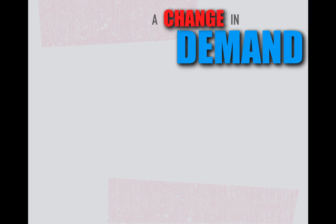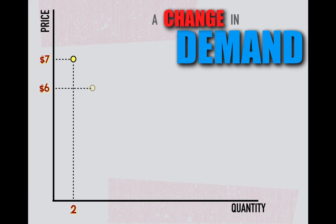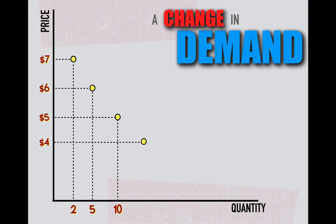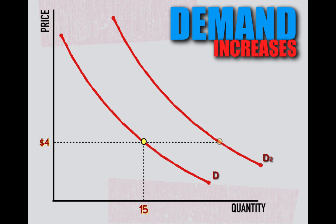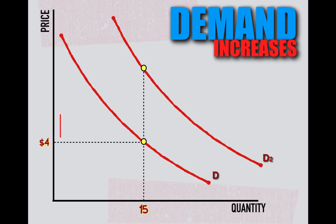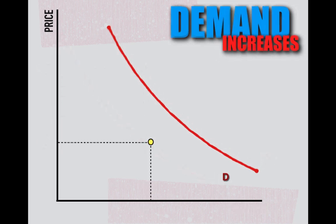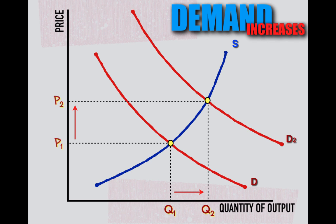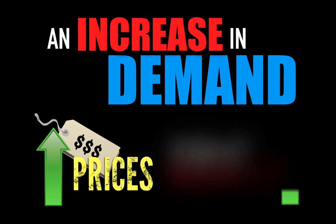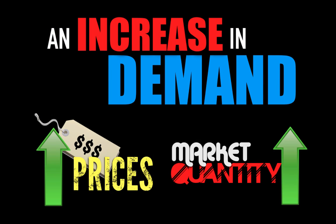Demand is defined as the different quantities of goods and services that consumers are willing and able to purchase at different price levels in the market. When factors fundamentally cause demand to increase, this means that consumers are willing and able to demand a greater quantity at every price level, or that they're more willing and able to pay higher prices at every quantity. Either way, a demand increase will cause the demand curve to shift to the right. At its new equilibrium point with supply, prices for the product will increase and the quantity of output in the market will increase.